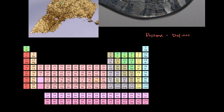When you look at the periodic table, the elements are written in order of atomic number. The atomic number is literally just the number of protons in the element. So by definition, hydrogen has one proton, helium has two protons, carbon has six protons. You cannot have carbon with seven protons — if you did, it would be nitrogen. Oxygen has eight protons; if you were to add another proton, it wouldn't be oxygen anymore, it would be fluorine. So the number of protons defines the element, and that's the number written at the top for each element in the periodic table.